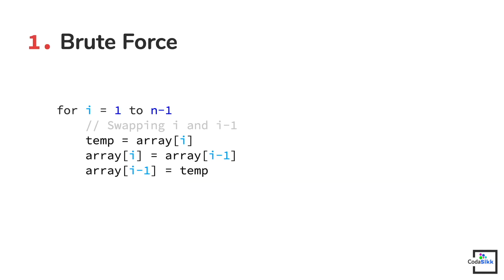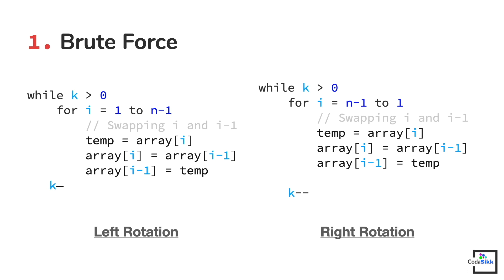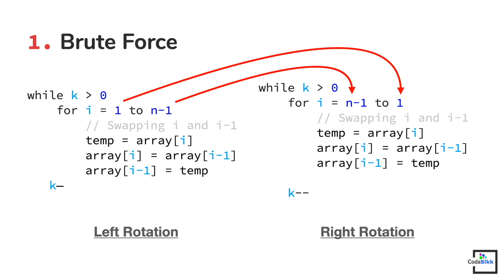Now we have code that left-rotates an array a single time. To left-rotate it k times, we just need to run this code a total of k times, which can be done by putting this piece of code inside a new outer loop that runs k times. This algorithm is for left rotation. To do a right rotation, just change the direction of the inner loop — instead of starting from 1 and going to n minus 1, start from n minus 1 and end at 1. The inner loop then rotates the array right once, and the outer loop right-rotates it k times.